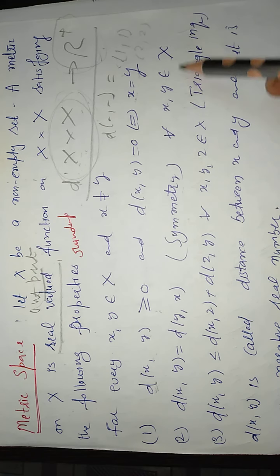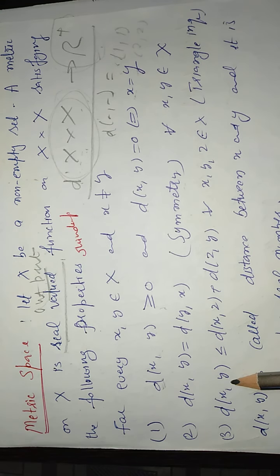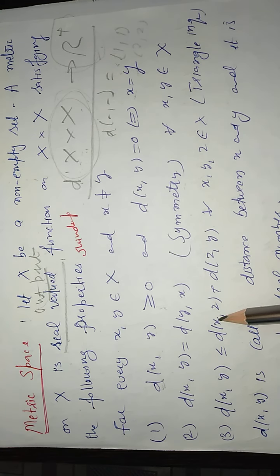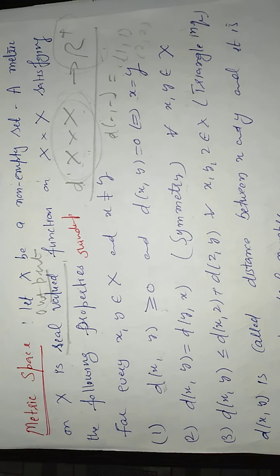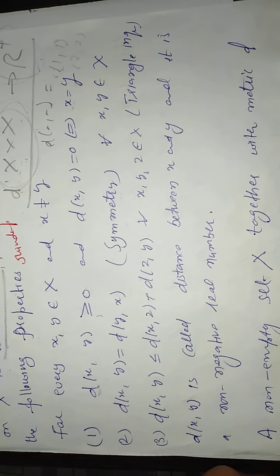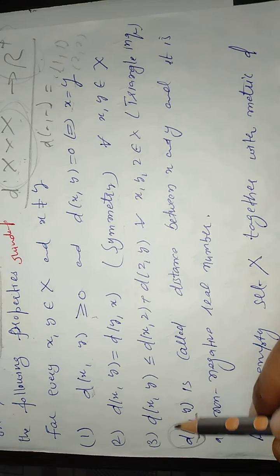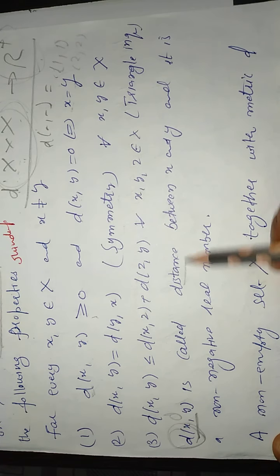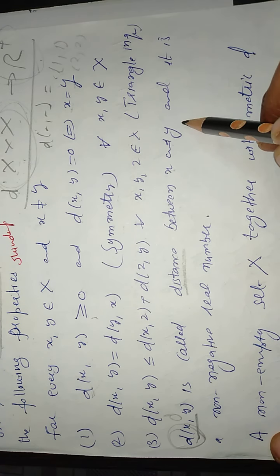The very important property is the triangle inequality: d(x, y) is less than or equal to d(x, z) plus d(z, y) for every x, y, z belonging to the set. This d symbol basically denotes the distance — it is the distance between x and y.